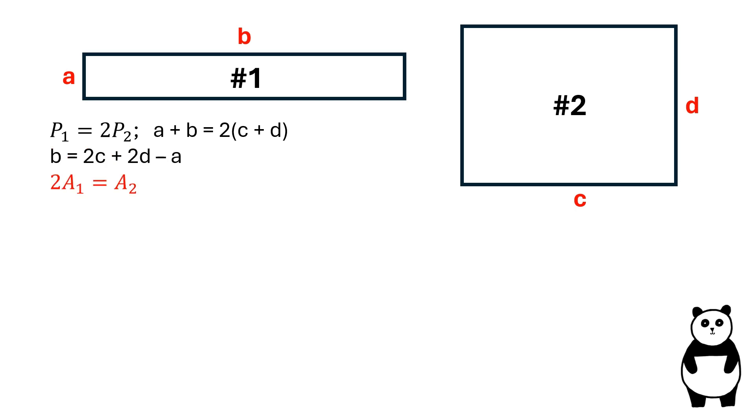Since the area of the second rectangle is equal to two times the area of the first rectangle, CD is equal to two times AB. Let's substitute the value of B into this equation and solve for C.